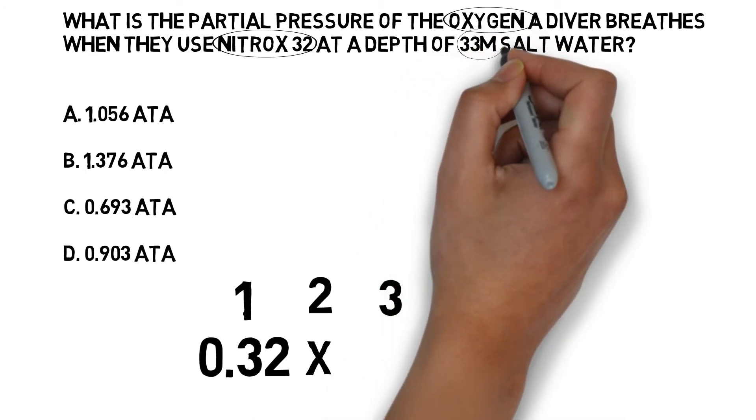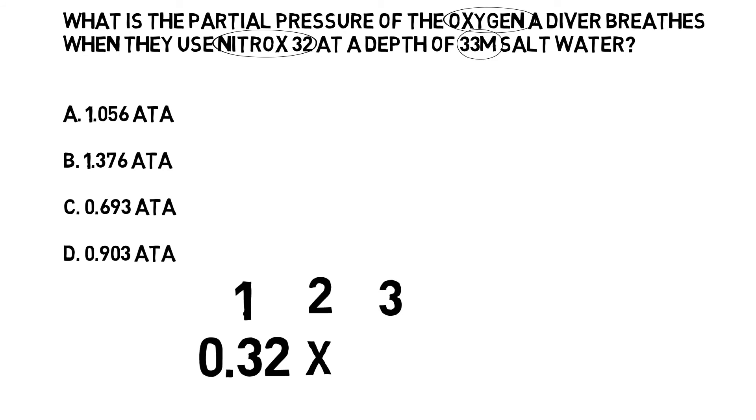Step three: we need to look at the depth the diver is at. They're at 33 meters in salt water, and we need to write the pressure that we would be under at 33 meters of salt water under step three.